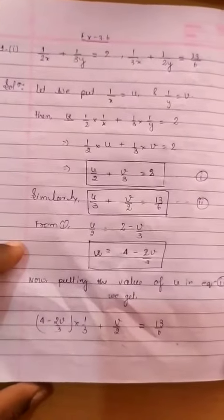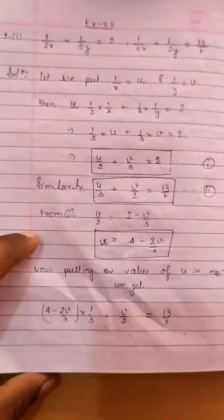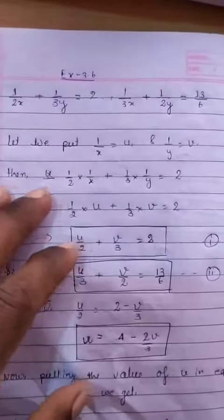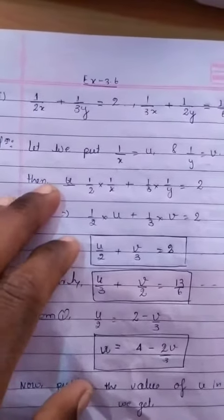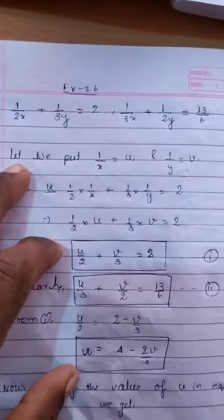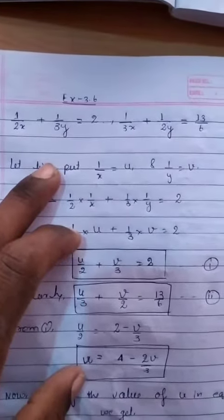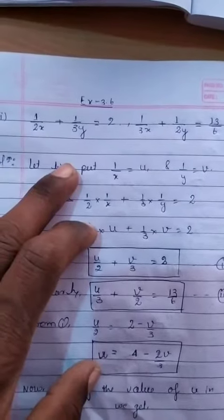The first question has been done by me for you. See how it is done. The question can be clearly seen. Here the question is 1 upon 2x plus 1 upon 3y equal to 2. Here it is not in the standard form of linear pair of equations in two variables.